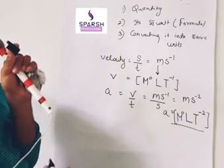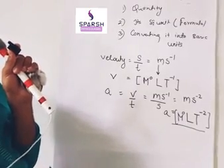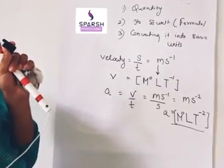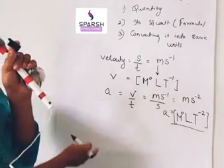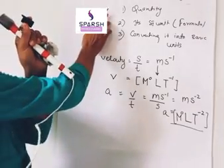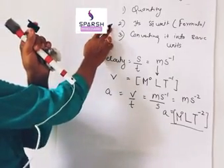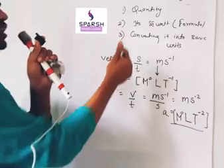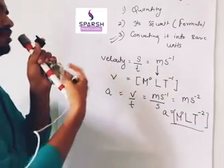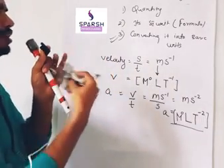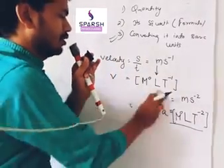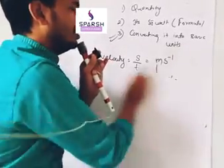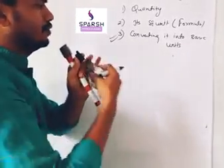These basic formulas you have to learn when writing dimensions of derived units. The three steps are: the quantity, its SI unit or formula, and convert it into basic units. Let us see for force — what is the dimensional formula for force?